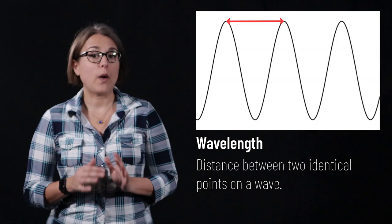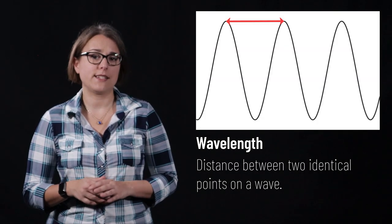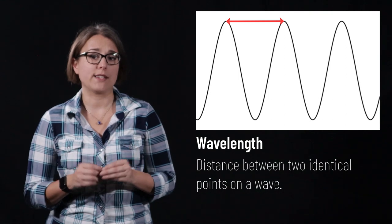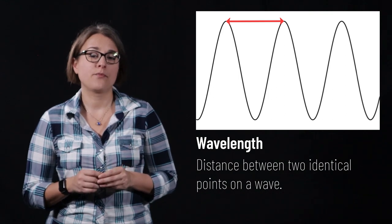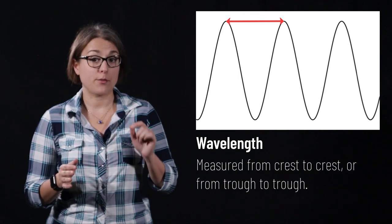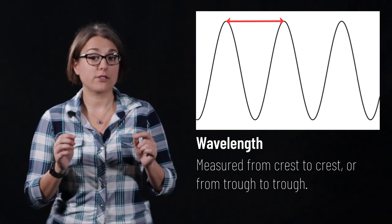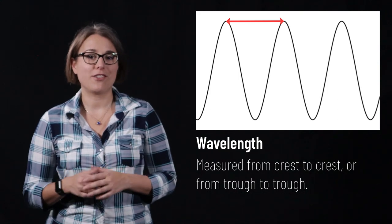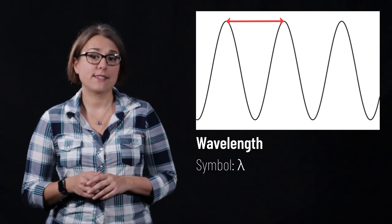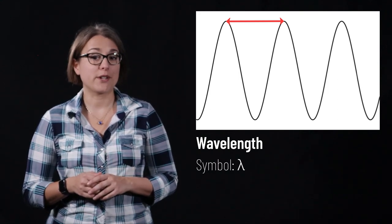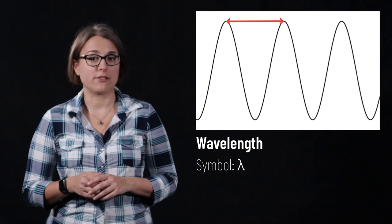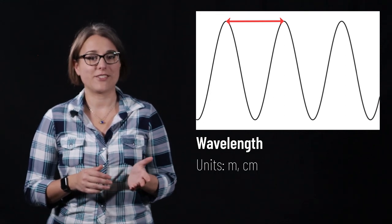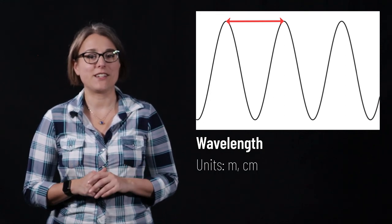The wavelength of a wave tells us the distance between two identical points on a wave. We usually measure wavelength from crest to crest or from trough to trough. Wavelength has a symbol of the lowercase Greek letter lambda, and has units of distance — meters or centimeters.